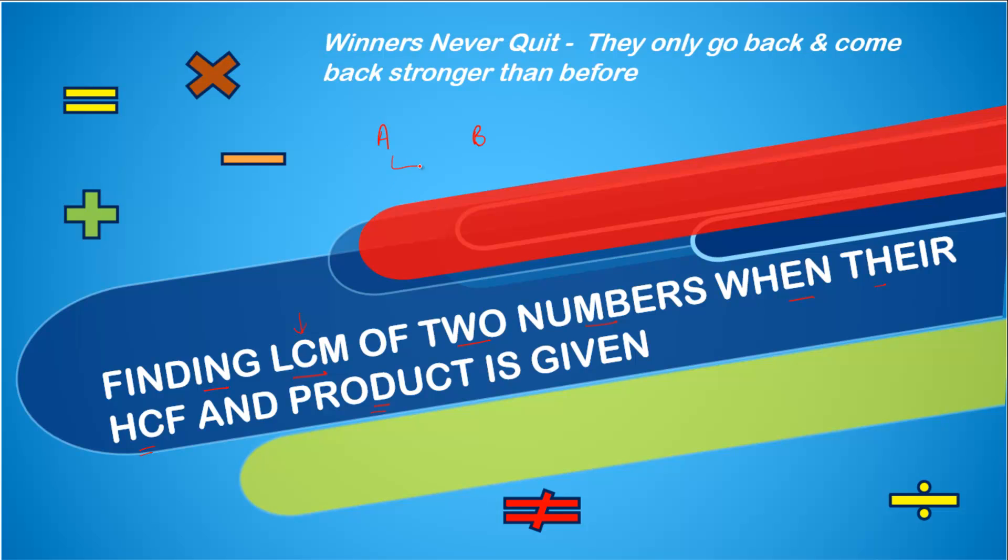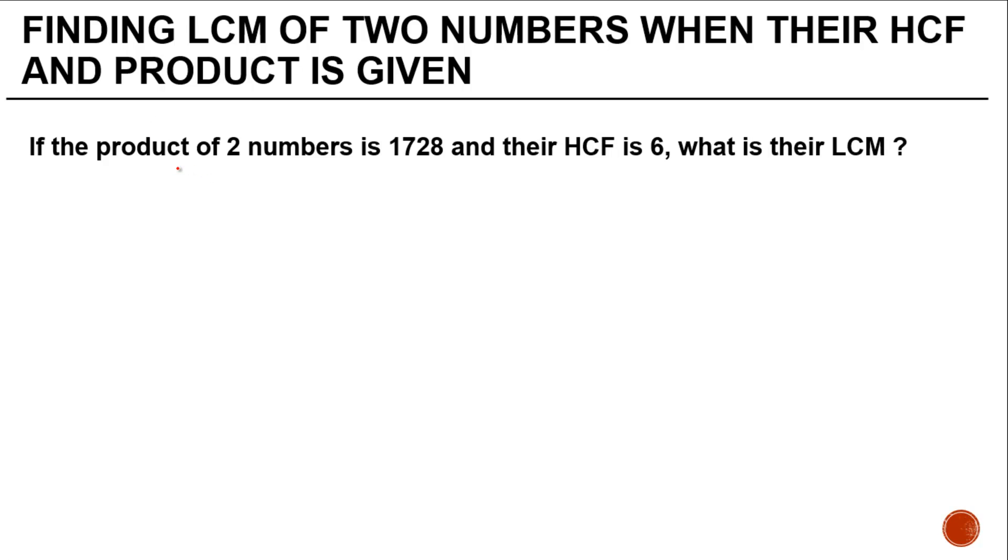You are asked what is the LCM of these two numbers when the highest common factor and the value of A × B (their product) are given. If the product of two numbers is 1728 and their HCF is 6, what is their least common multiple?